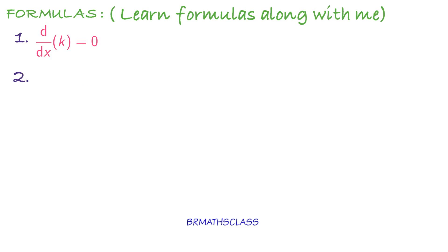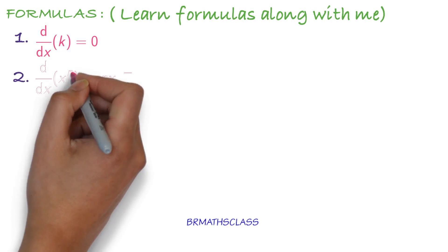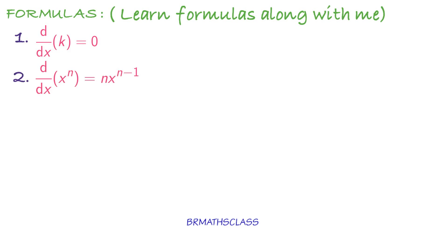Second formula: d by dx of x power n equals n into x power n minus 1. It means the derivative of x power n is n into x power n minus 1. The answer starts with n — n into x power n minus 1. You reduce the power by one, giving n minus 1. You are learning the second formula.